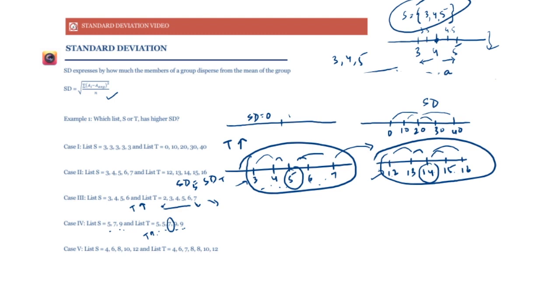For S = {4,6,8,10,12} and T = {4,6,7,8,8,10,12}, we added two elements — an 8 and a 7 — both very close to the mean of 8. Adding elements close to the mean causes SD to decrease, so SD of T will be lower. The general intuition: whenever you think about SD, imagine a number line with data points on it. If the data points are closely packed, expect a small SD; if they are far apart, expect a large SD.